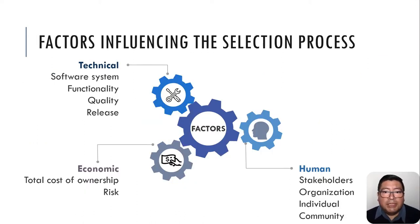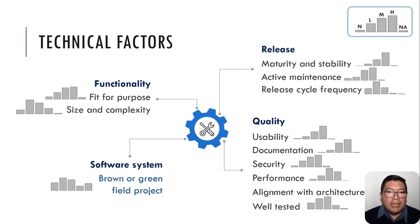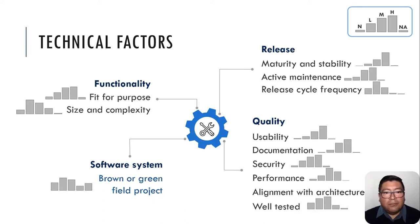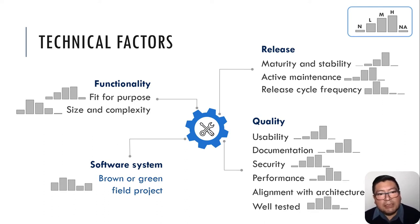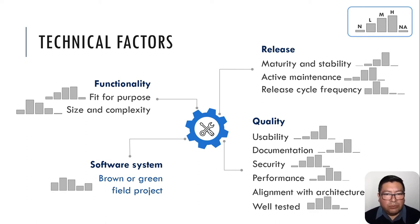What we found is that factors influencing the selection process can be categorized in three different aspects: technical, economic, and human. Regarding the technical factors, in the case of functionality, for example, we have fit for purpose and size and complexity. As you can see in the bars representing the level of influence according to our survey respondents — no influence, low influence, medium influence, high influence, and not applicable — interviewees and survey respondents agree that functionality is one of the core aspects when deciding which library to adopt. Fit for purpose and size and complexity are quite important.